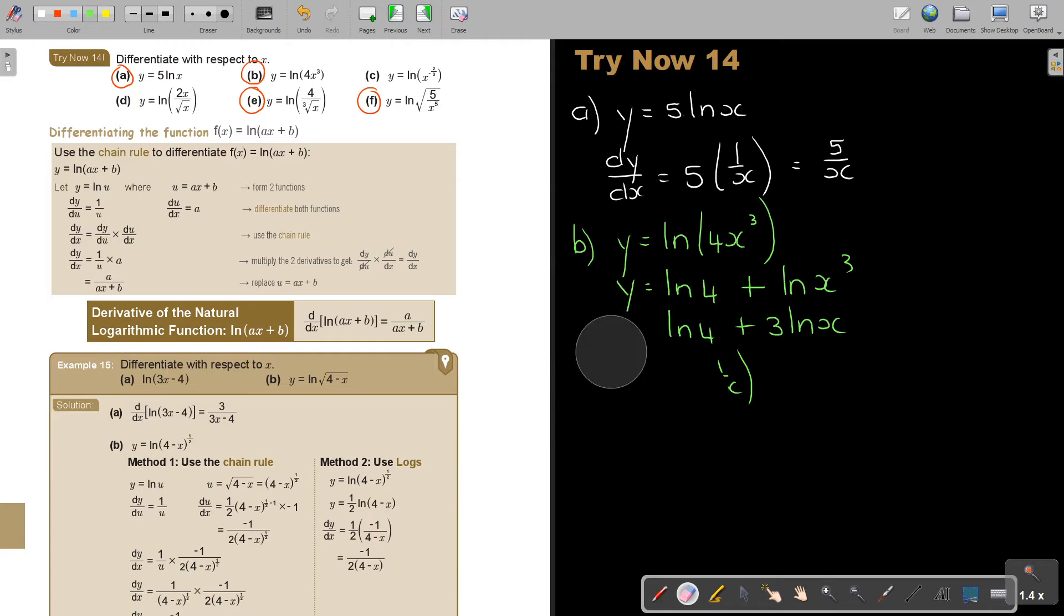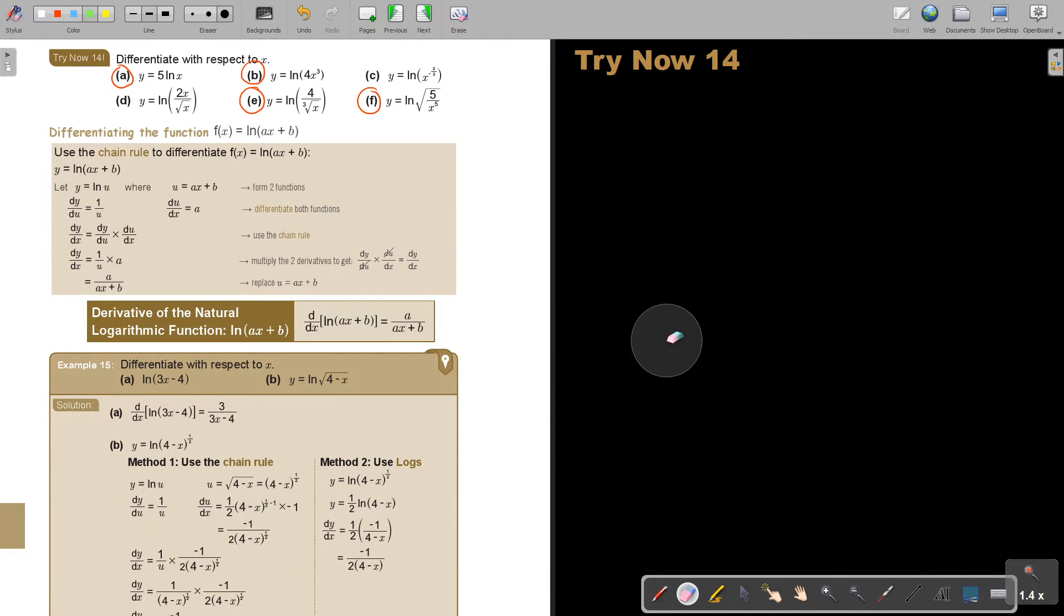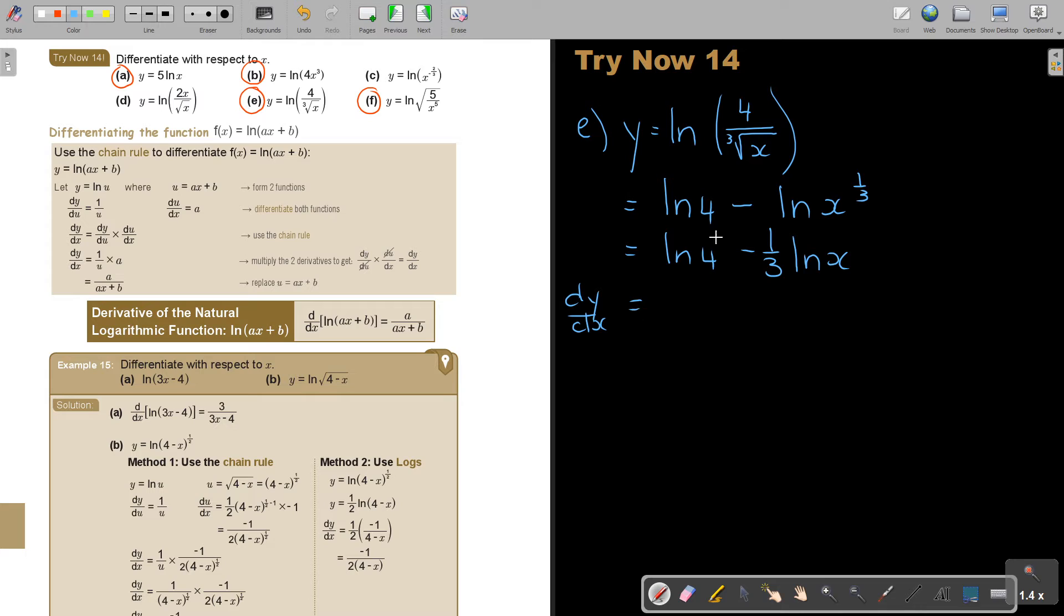Then, if I do number E. Y is equal to ln(4 over x cubed). So, this will be ln 4 minus ln x cubed. Now, it's always better to take it out. So, I think I'm going to really do it here. Otherwise, I have to rewrite that step. Then, I'm just going to put this in front. And then, if I differentiate now, this is going to become 0 minus 1 third 1 over x. And that will give me negative 1 over 3x. And that will be my final answer.